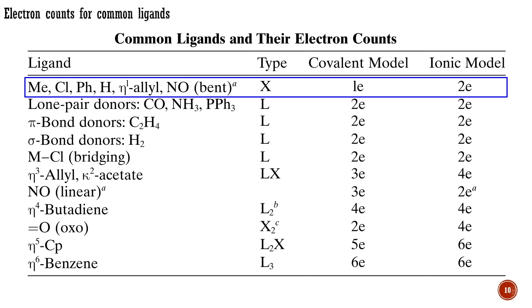Anionic X-type ligands, such as hydride, chloride, or methyl anion, are 1-electron atoms or groups on the covalent model but 2-electron ions on the ionic model. On the covalent model, a 1-electron X-radical bonds to a neutral metal atom. On the ionic model, a 2-electron X-anion bonds to a metal cation.